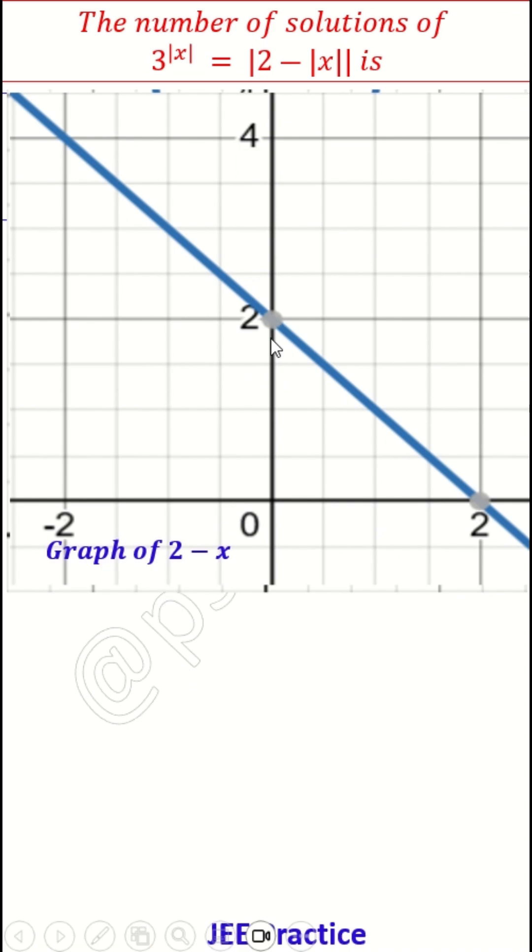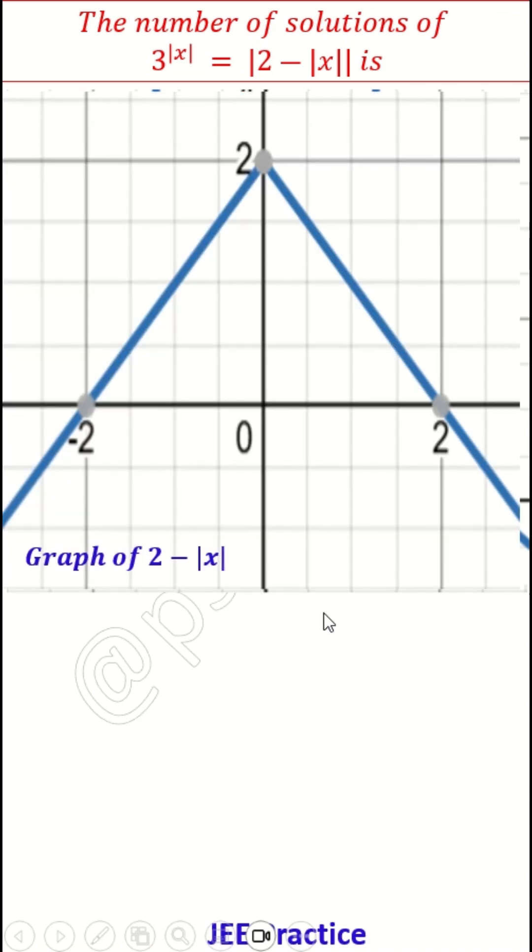2 minus absolute x. Absolute x is, this negative value will not be there. This will exactly fall down. It will behave exactly as a mirror image of the positive x axis line. So it looks something like this. At 2, it will fall down like this.